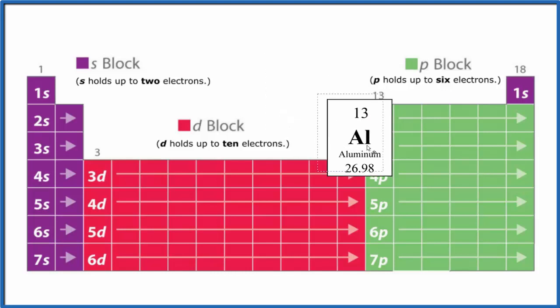Aluminum is right here on the periodic table. So we're just going to follow the pattern until we get to aluminum. We start at the first energy level: 1s¹, 1s². Then we go to the second energy level: 2s¹, 2s².